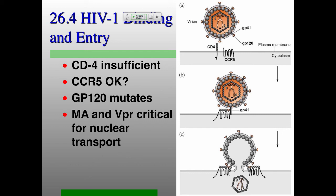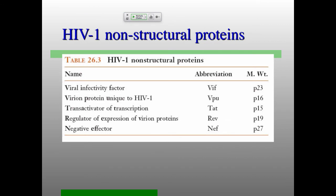VPR is the extra virion protein structural protein present in HIV but not in other retroviruses. VPR is what you need to get nuclear transport of the reverse-transcribed double-stranded DNA into the nucleus — this is why HIV can get into cells that are otherwise quiescent. There are also non-structural proteins: VIF, VPU, and NEF.